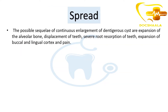Regarding spread: once the cyst is formed, it spreads into surrounding areas. First, it involves the alveolar bone associated with the tooth. Then displacement of the tooth occurs, followed by root resorption and expansion of buccal and lingual cortex, resulting in pain.